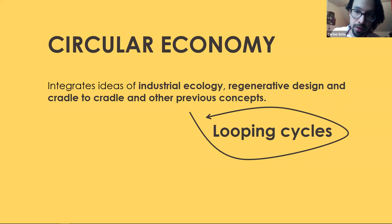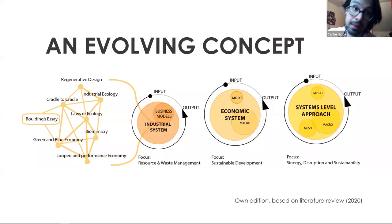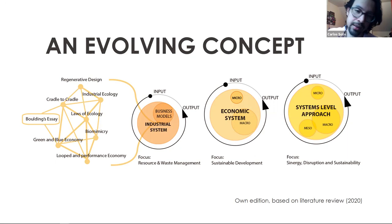From this context is where the circular economy concept emerged. It is a concept that integrates ideas of industrial ecology, regenerative design, cradle to cradle, and other previous concepts — the main idea being to loop cycles within systems. This is an evolving concept initially applied to industries, then evolved as an economic system applicable not only at the micro but at the macro level. The latest definitions from organizations such as the Ellen MacArthur Foundation and the World Bank describe it as a system-level approach applicable at micro, macro, and meso levels.